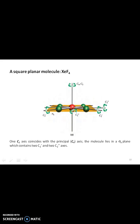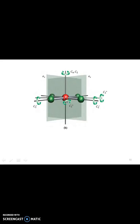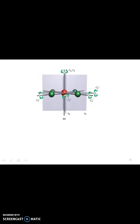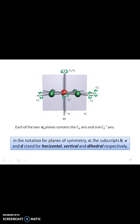Here, next we consider XeF4, that is xenon tetrafluoride molecule. Here we can see the σh plane which is perpendicular to the principal axis C4. Also, this molecule contains two σv planes. Consider the C4 axis and one C2 axis. In the notation for the plane of symmetry, the subscripts h, v, and d stand for horizontal, vertical, and dihedral respectively.